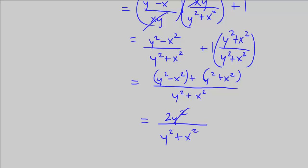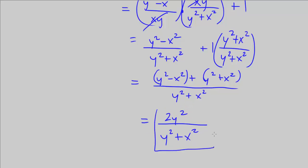We cannot cancel these two because this is all over y squared plus x squared — and this is our final simplified fraction. This ends CPM Pre-Calculus Chapter 3, Number 96.